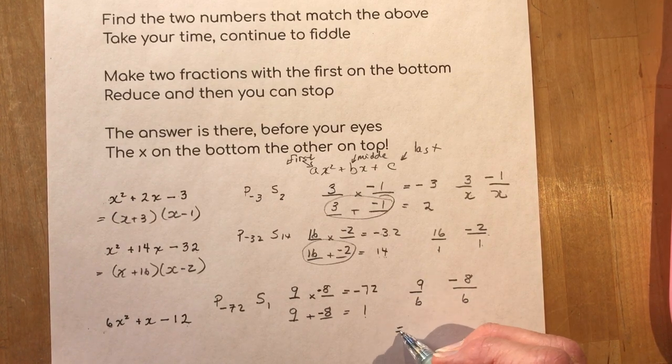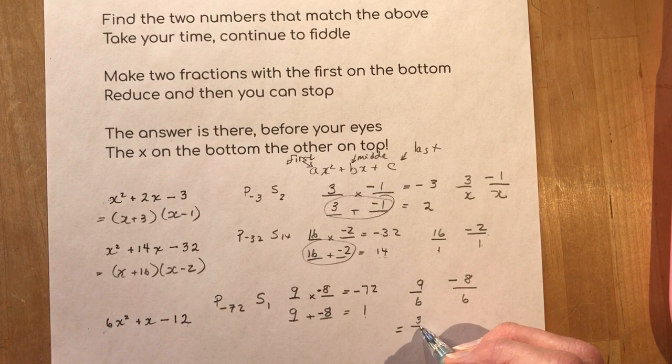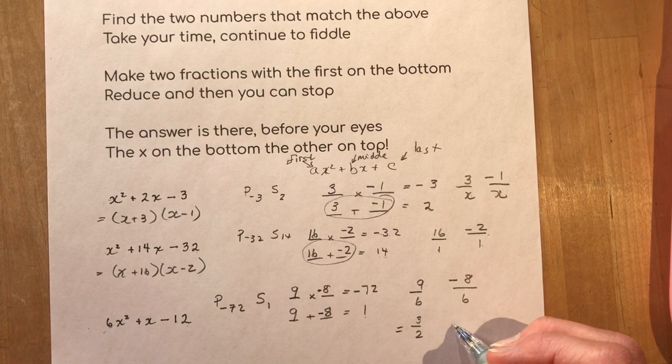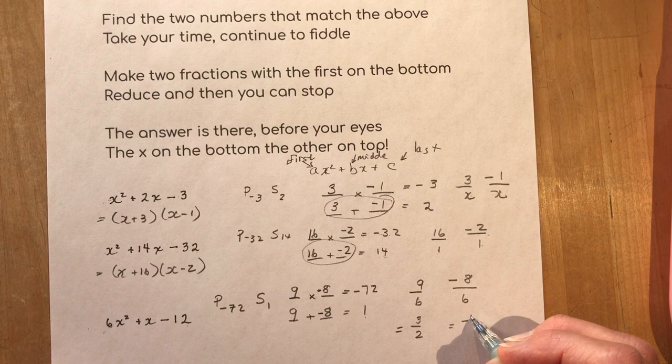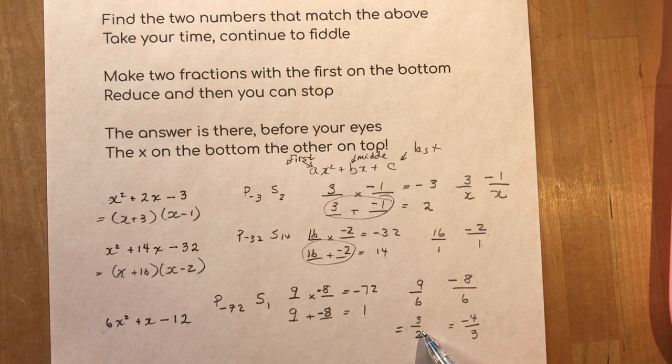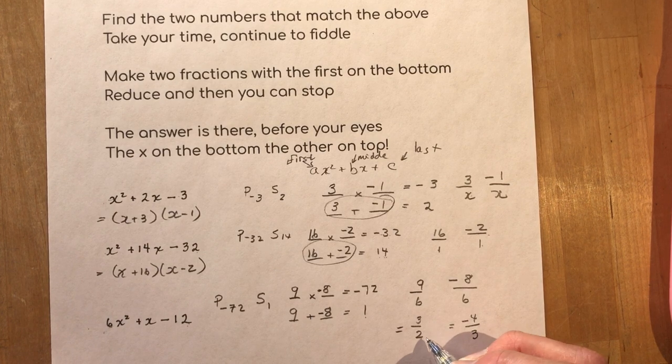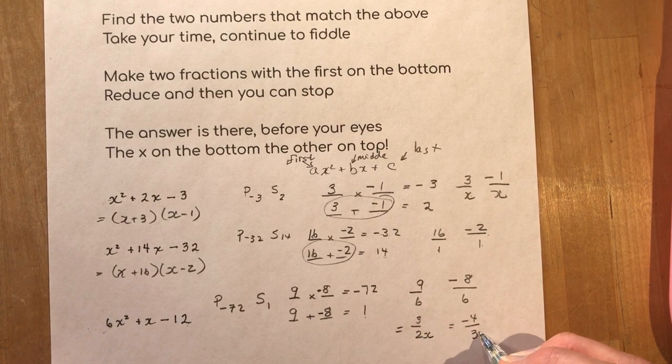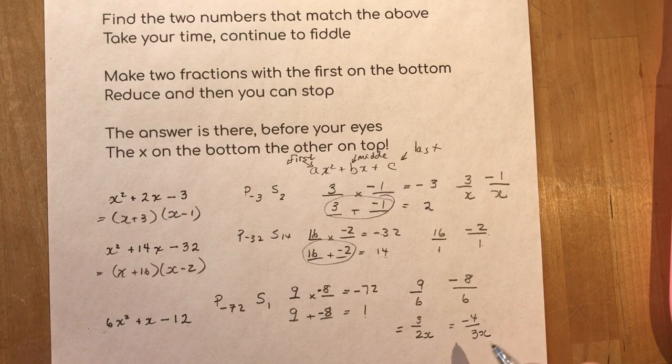Reduce. So reduce this fraction. They both divide by three. These both divide by two. So I've reduced and now I can stop the answers there before your eyes. The x on the bottom or whatever the variable is that's in it. The other on top.